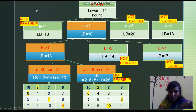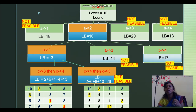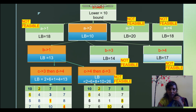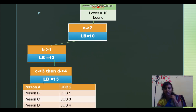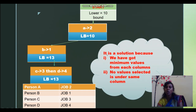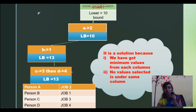Comparing the two lower bounds, 13 is the better solution. So job 2 is allocated to A, job 1 is allocated to B, job 3 is allocated to C, and job 4 is allocated to D. This is our final answer with the minimum cost. No value is selected under the same column — A gets job 2 with cost 2, B gets job 1 with cost 1, C gets job 3, and D gets job 4. This is the solution obtained by branch and bound. If you have any doubt on this problem, please contact me.